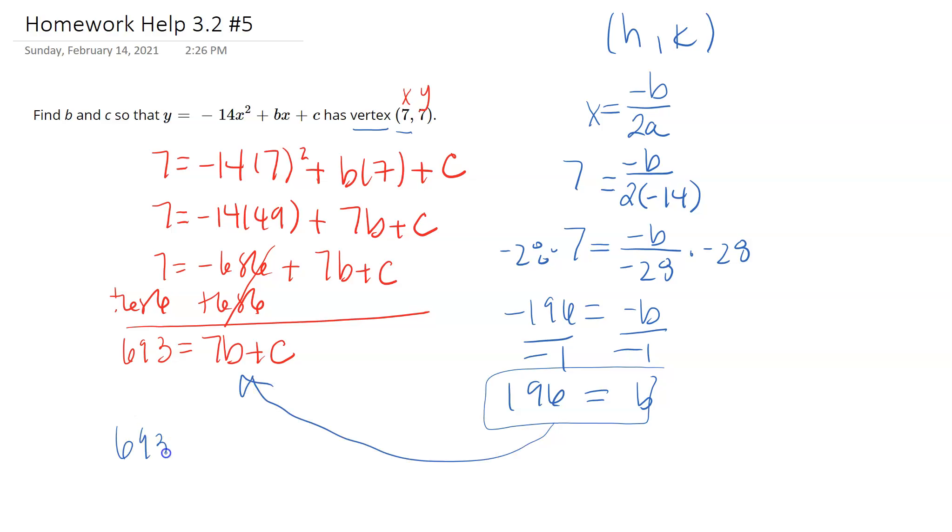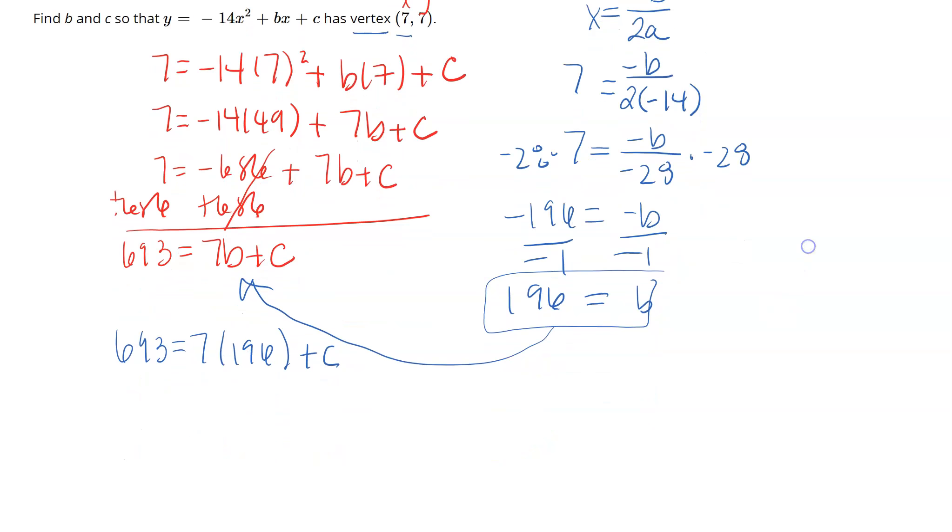So I have 693 equals 7 times 196 plus c, and I'm just going to use my calculator to help me finish this up. 7 times 196 gives me 1372 plus c. I'm going to subtract that over, so c equals 693 minus 1372, which is negative 679.